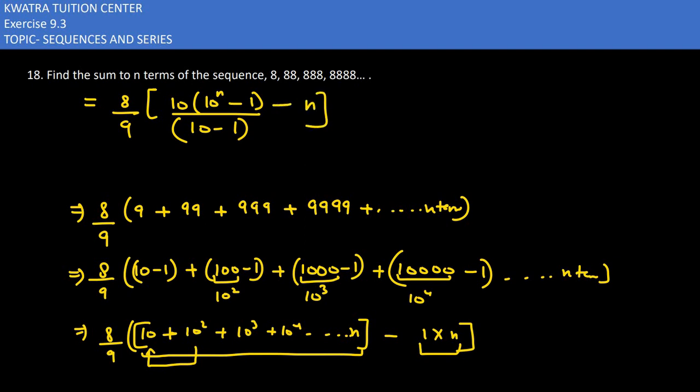The second term would be n only. So after that, what you have to do is multiply 8 by 9 by 10, and 9 by 9 to get 81. The first value is 10 to the n minus 1. When we multiply 8 by 9 by 10, the second value is 8 by 9 into n, and that would be your answer for the 18th part.